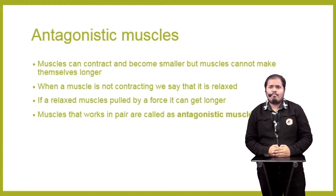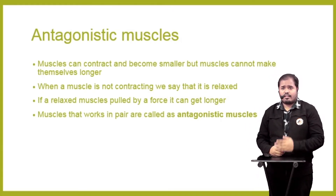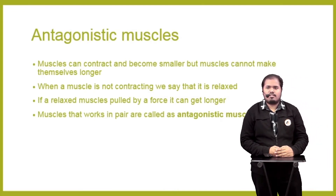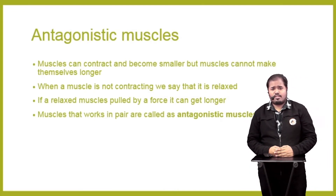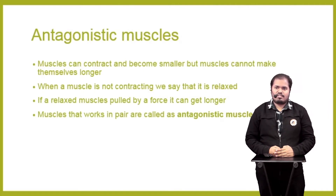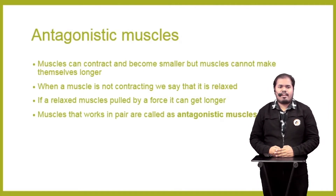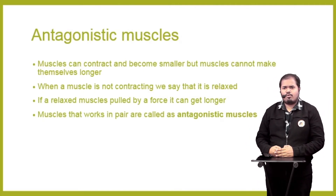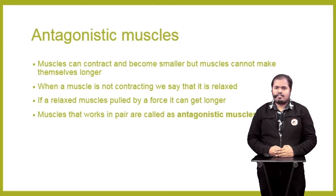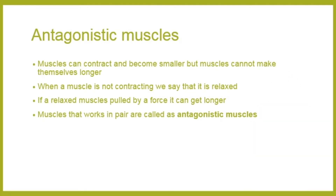Antagonistic muscles means when muscles are working with the help of another muscle. A muscle can contract and become smaller, but muscles cannot make themselves longer. When a muscle is not contracting, we say it is relaxed. If a relaxed muscle is pulled by a force, it can get longer. Muscles that work in a pair are called antagonistic muscles.